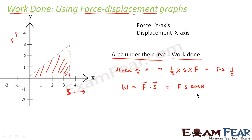We also know that work done equals F dot S, which is F·S·cos θ. Here we get F·S × (1/2), so this 1/2 represents the value of cos θ. In this case, cos θ = 1/2, meaning θ = 60°. The basic idea is that for any curve between F and S, the area under the curve gives the value of work done.